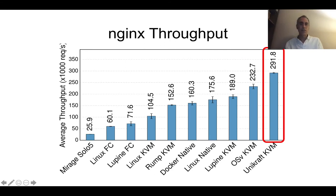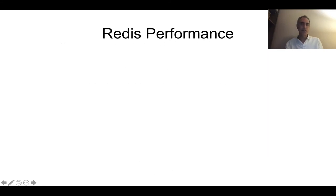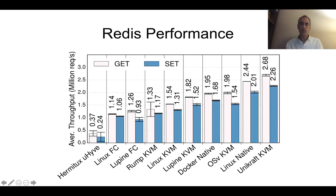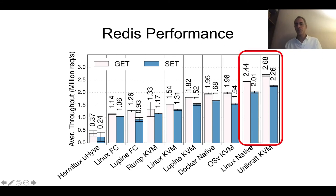For Redis performance, same setup as before, we measure how long it takes to do gets and sets. Basically, you can see that Unicraft is at the performance of Linux native.